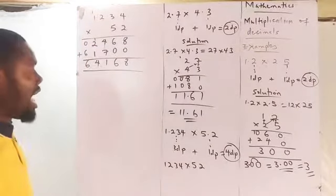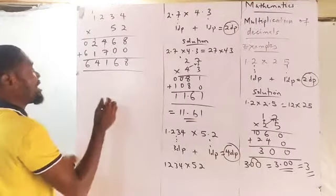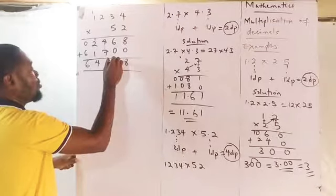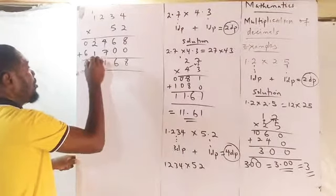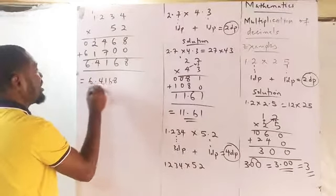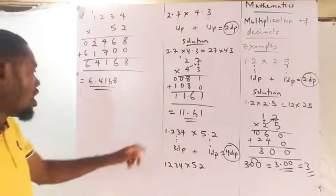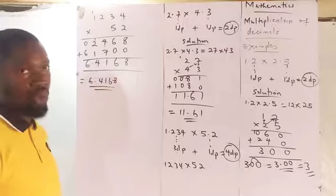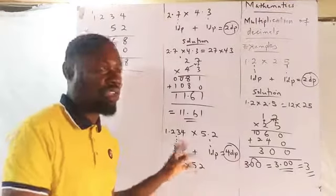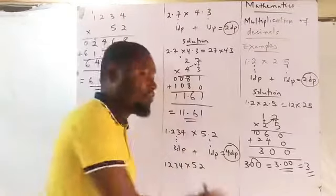Recall that the total decimal places we added was 4. So start with the unit number and count 4 numbers: 1, 2, 3, 4 — then put your point. Our answer is 6.4168. This is the result you get when you multiply 1.234 times 5.2. This is how you multiply decimal numbers using this method.